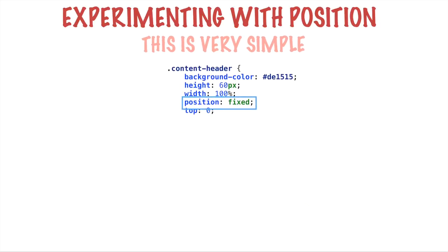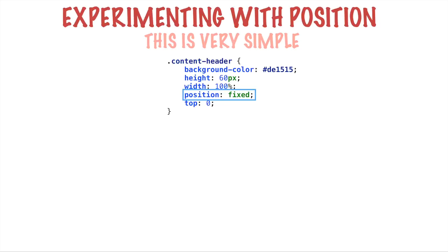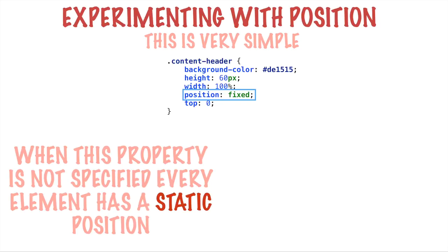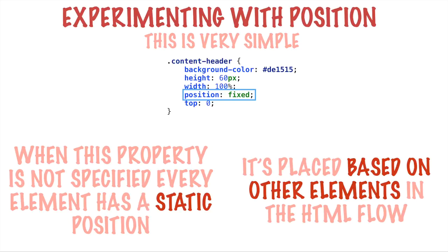Every element has a default value for the position property in CSS. The default value for every element is called static. When you don't specify the position property in CSS for an element, the default value it assumes is static. Position: static basically means place me as per the HTML rendering. That element is placed based on other elements in the regular HTML flow — laid out left to right, top to bottom. Depending on the element, if it requires a line break it will be placed on a new line. That is what position: static means.